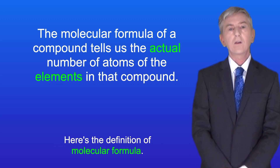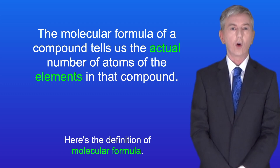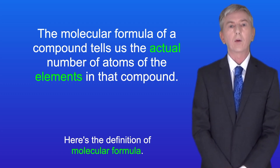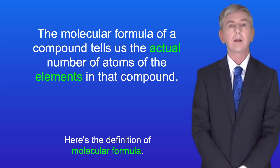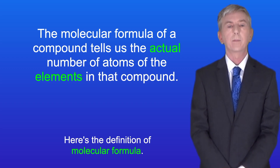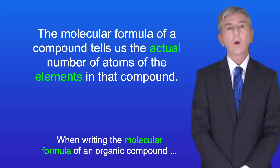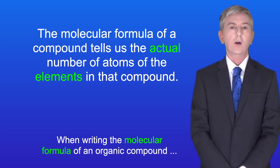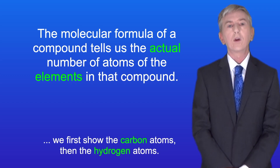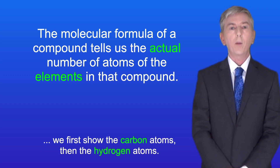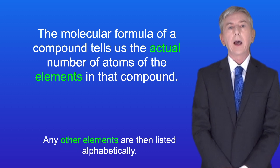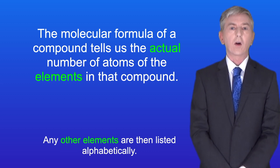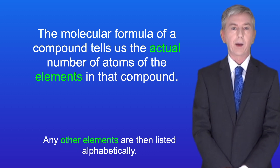The molecular formula of a compound tells us the actual number of atoms of the elements in that compound. When writing the molecular formula of an organic compound, we first show the carbon atoms, then the hydrogen atoms. Any other elements are then listed alphabetically.